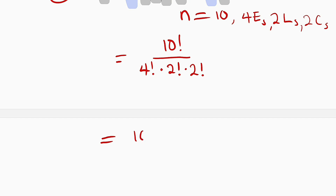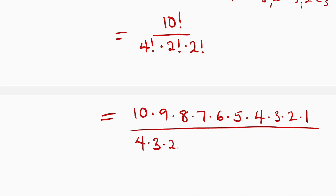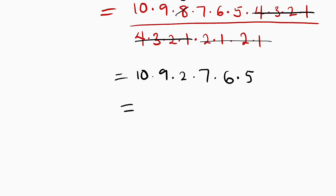Now let us simplify. We have ten multiplied by nine multiplied by eight multiplied by seven multiplied by six multiplied by five multiplied by four multiplied by three multiplied by two multiplied by one, divided by four factorial — which is four multiplied by three multiplied by two multiplied by one — then multiplied by two factorial, which is two times one, and another two factorial, which is two times one. Performing cancellation: four down to one cancels with four down to one, and two times one times two times one equals four, and that four goes into eight two times. What remains is ten multiplied by nine multiplied by two multiplied by seven multiplied by six multiplied by five.